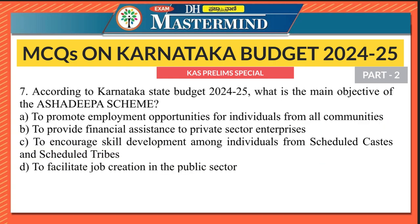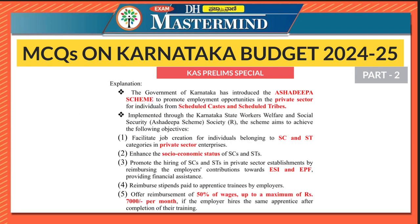The seventh question: According to Karnataka State Budget 2024-25, what is the main objective of the Ashadipa scheme? The right option is option C — to encourage skill development among individuals from Scheduled Castes and Scheduled Tribes. The government of Karnataka introduced the Ashadipa scheme to promote employment opportunities in the private sector — not public sector — for individuals from SC and ST communities.